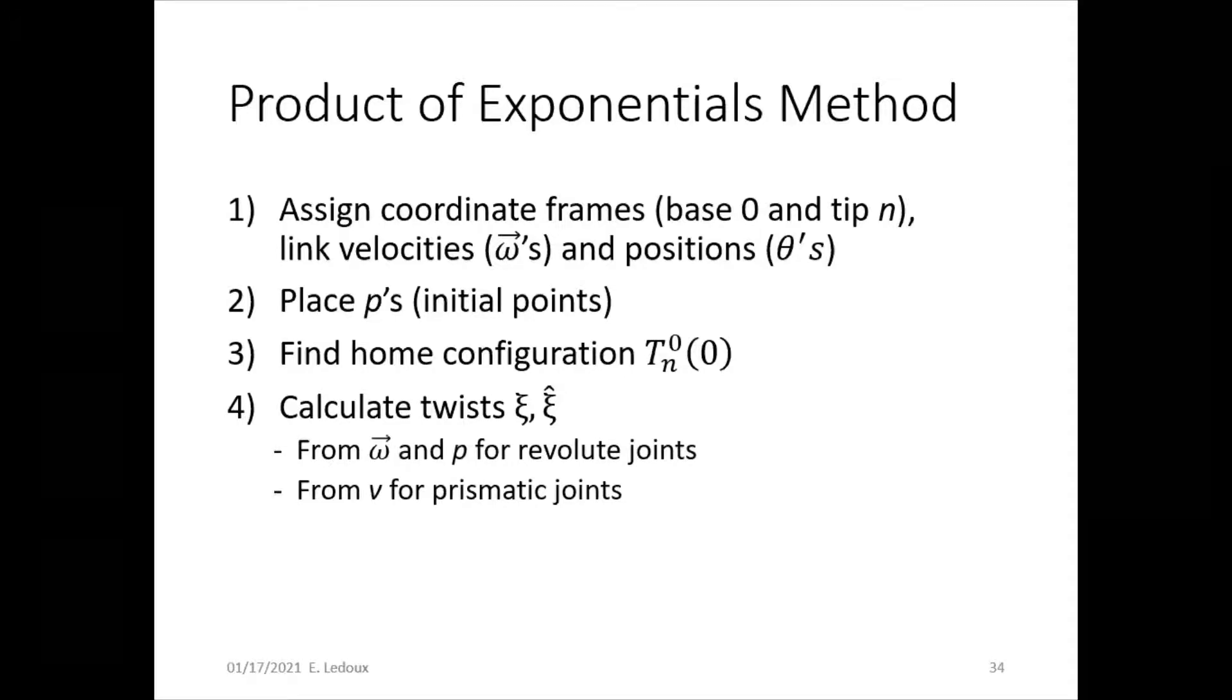The fourth step is to calculate the twists. So ξ and ξ̂ are the twist coordinates and the twist matrix respectively. You get those from the omega and the p for revolute joints or just from linear velocity for the prismatic joints.